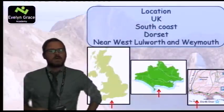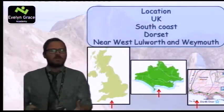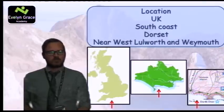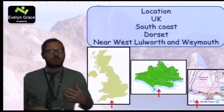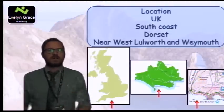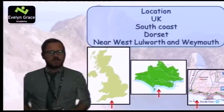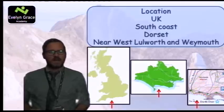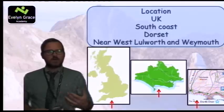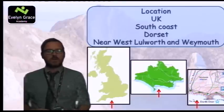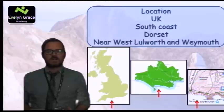So first of all, Durdle Door. For a level three answer you're going to need a very detailed description of the location. As you can see in the first map, we have a map of the UK and we're pointed to the south coast, so we first of all have to say it's in the UK and it's on the south coast. We then have a map of Dorset, which is a county on the south coast just below Wiltshire, and it's a coastal area so there are lots of geographical features going on around the coast. It's a really important area for geography and for your GCSEs.